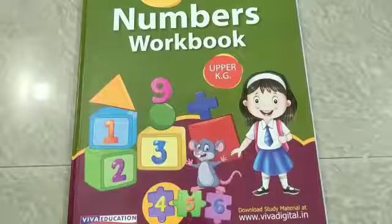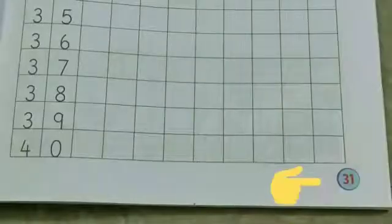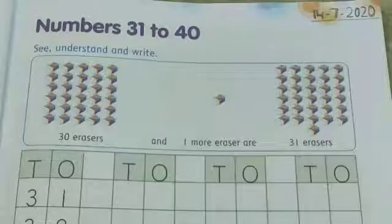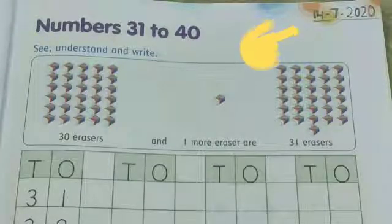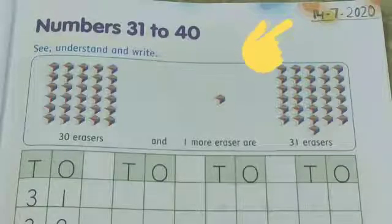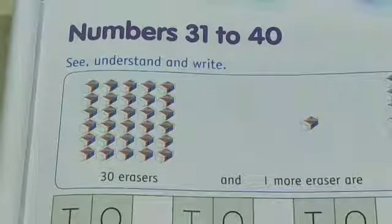So children, this is our maths workbook. Now open page number 31. Children, at first we have to write today's date on the top. So today's date is 14th July 2020, and our topic is numbers 31 to 40.